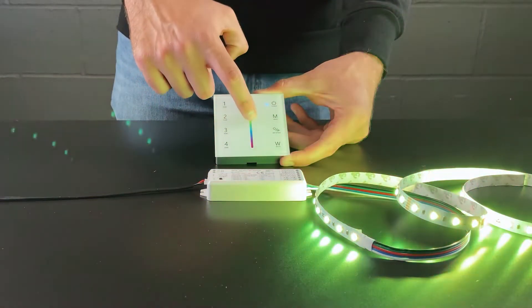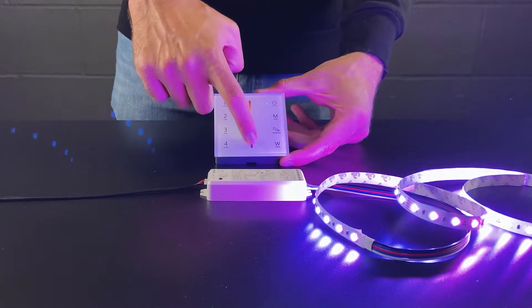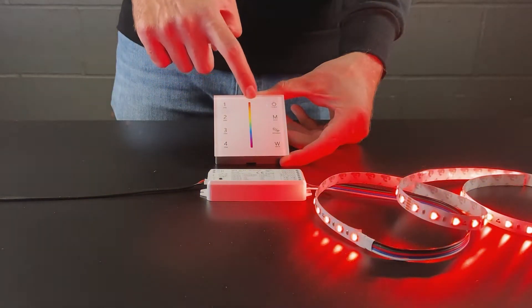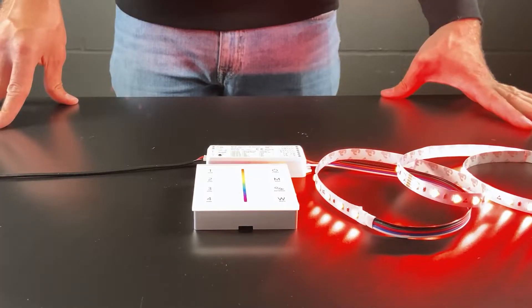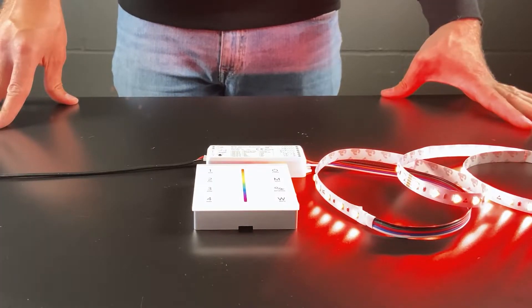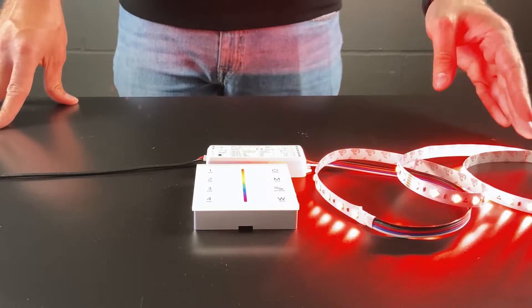You will then be able to control the RGBW LEDs. On RGBW tape, the white on the RGBW tape has its own individual chip.